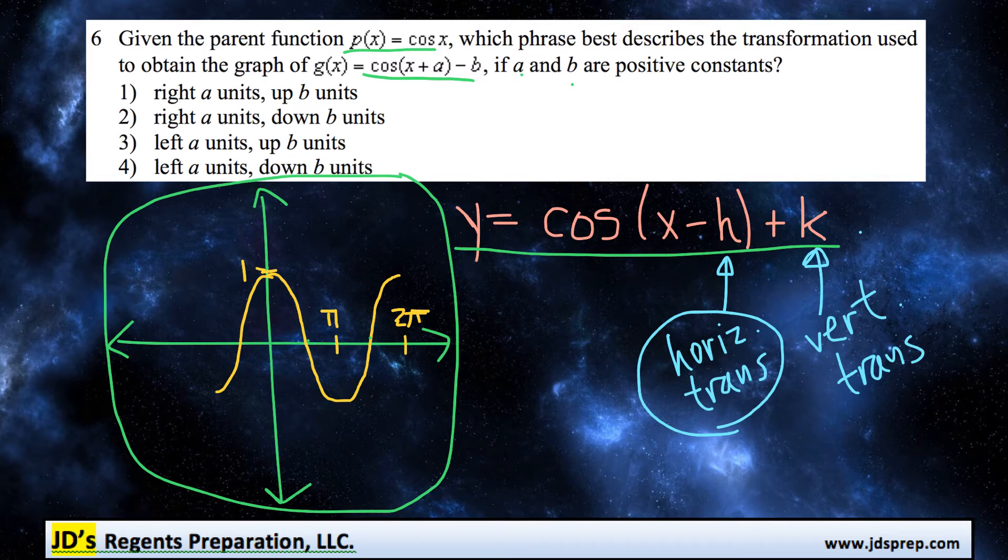k, on the other hand, represents a vertical translation, so going up or down. So for example, if k had a value of 2, it would move two units up.